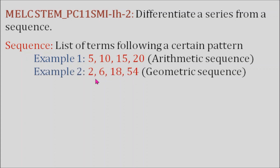Another example: 2, 6, 18, 54. This is what we call a geometric sequence. The common ratio here is 3, meaning if we multiply the first term by 3, that's 2 times 3, which gives us 6. Again, if we multiply 6 by 3, it gives us 18. And multiplying 18 by 3 gives us 54.